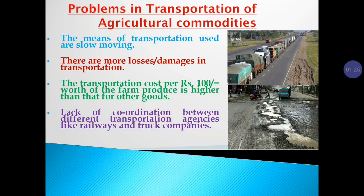The transportation cost per hundred rupees worth of farm produce is higher than that for other goods, because agricultural products are more prone to damage compared to industrial products. Another important problem in India is the lack of coordination between different transportation agencies — for example, lack of coordination between railways and truck companies. This is another challenge with transportation in the country.